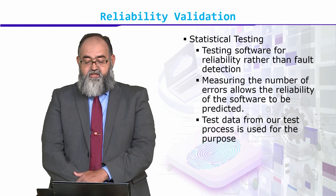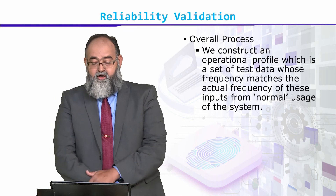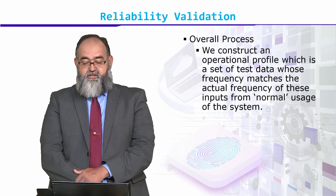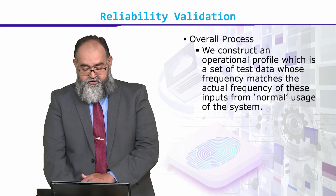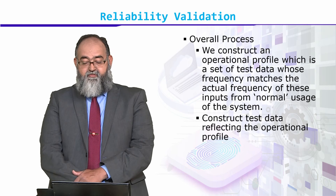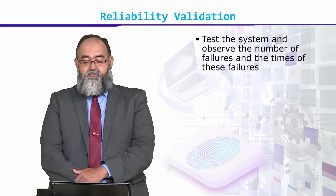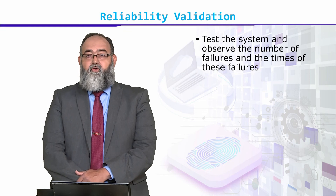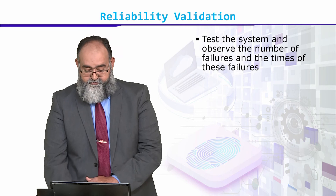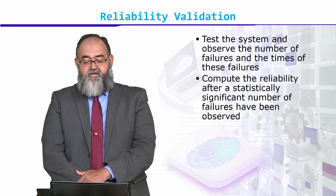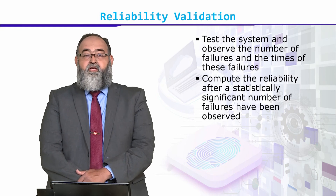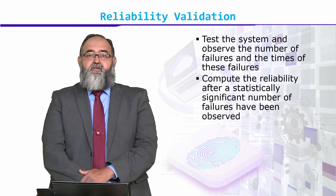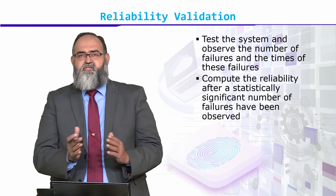Test data from the test process is used for this purpose. We construct an operational profile, which is a set of test data whose frequency matches the actual frequency of inputs from normal usage of the system. We test the system and observe the number of failures and the times of these failures, to establish a measure of reliability. We compute reliability after a statistically significant number of failures, so this is a statistical measure, not an exact 100% statement — it will vary with perhaps 5-10%.